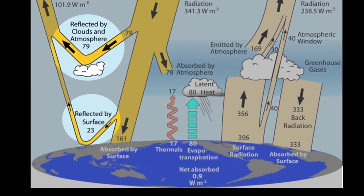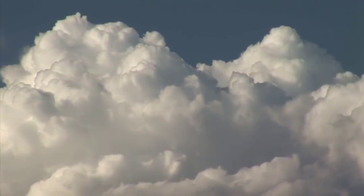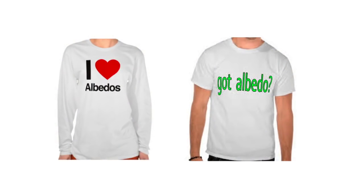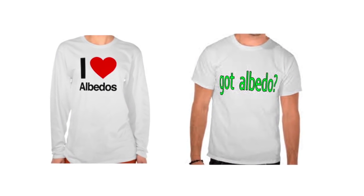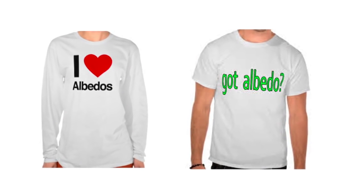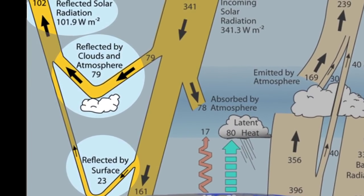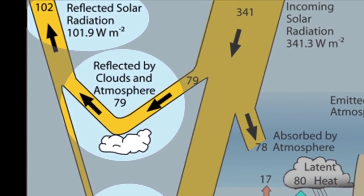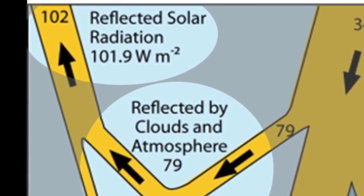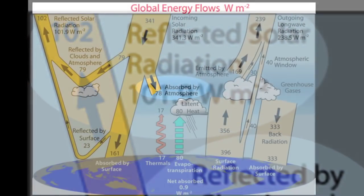We call the reflectivity of a surface its albedo. Albedo is the reason people wear light colors in the summer to reflect rather than absorb solar energy. Added together, nearly 30% or 102 watts per square meter of the sun's energy returns directly to space.